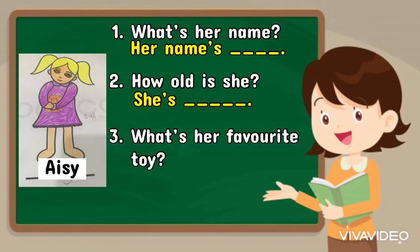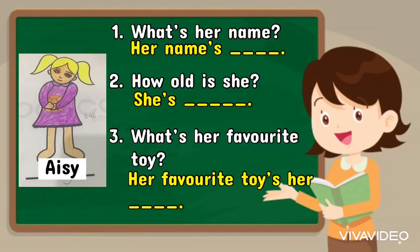Good. Number 3: What's her favourite toy? Her favourite toy is her ball. Repeat after me: Her favourite toy is her ball.